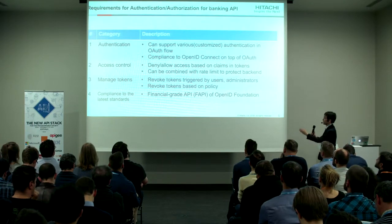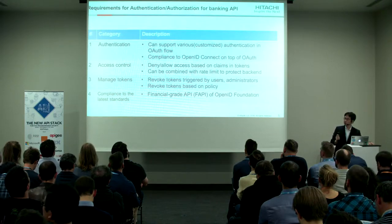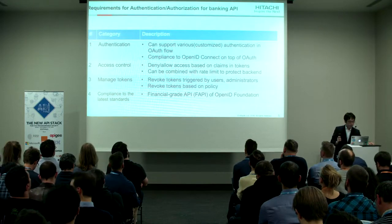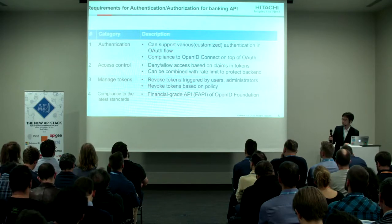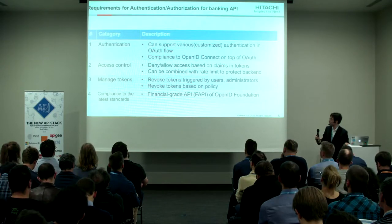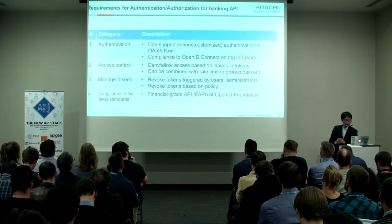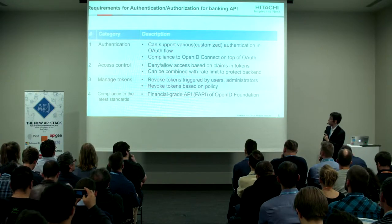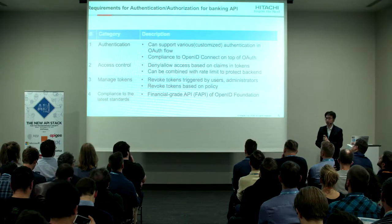The third requirement is management of tokens — we have to manage and revoke tokens. The fourth requirement is compliance to the latest standards. In Japan, the Financial-grade API (FAPI) of the OpenID Foundation is required.